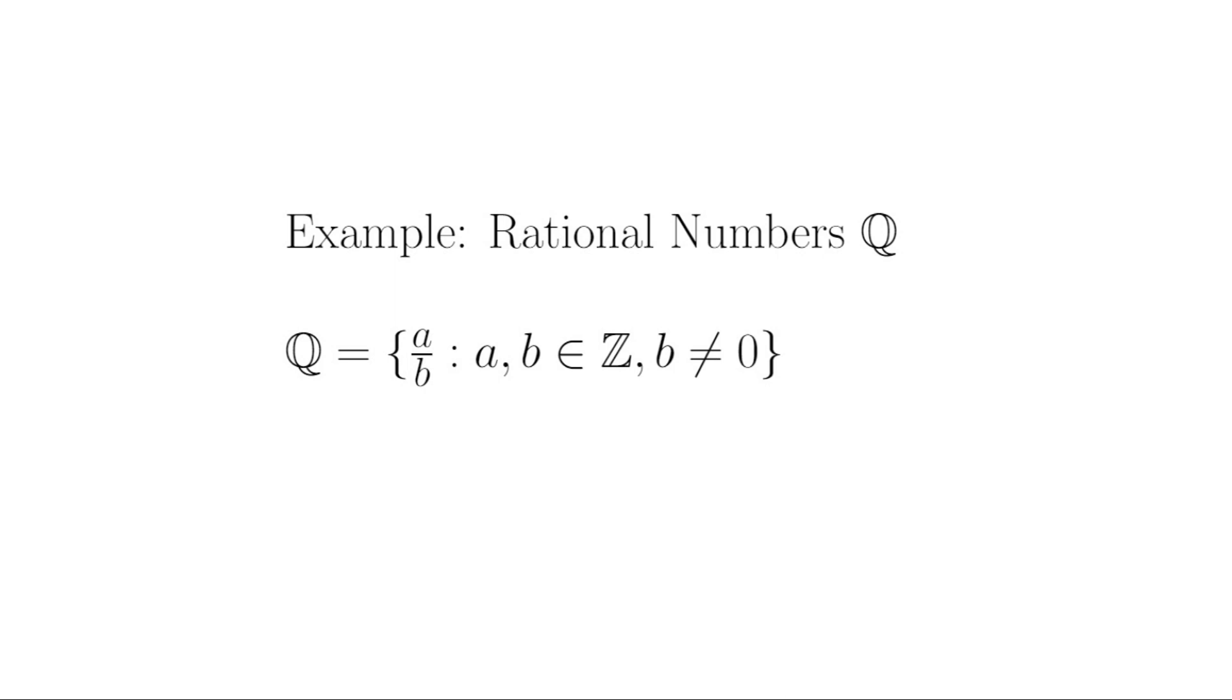Example, consider the set of rational numbers Q. Q for quotient, by the way. This is the set of all real numbers that can be written as a fraction. In other words, they can be expressed as a ratio of an integer numerator and non-zero integer denominator.